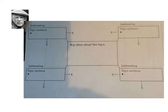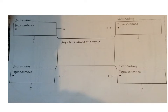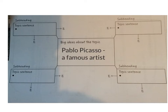I'm going to use this plan here to help me plan my ideas about my story. First of all, I need to think about my big idea about the topic — so that's really what I'm writing about. My big idea is Pablo Picasso, a famous artist.